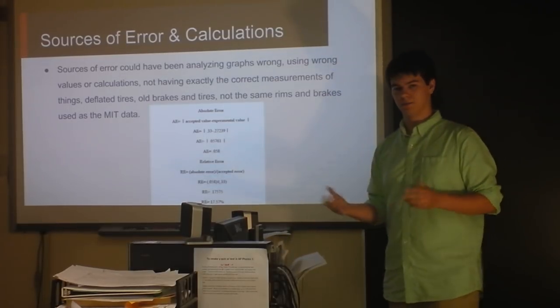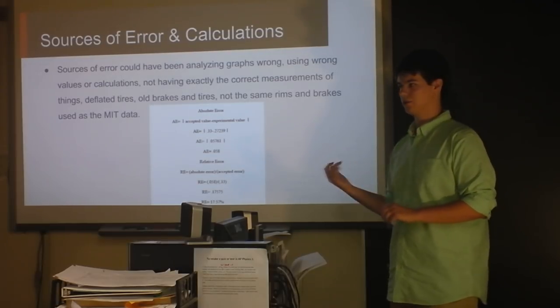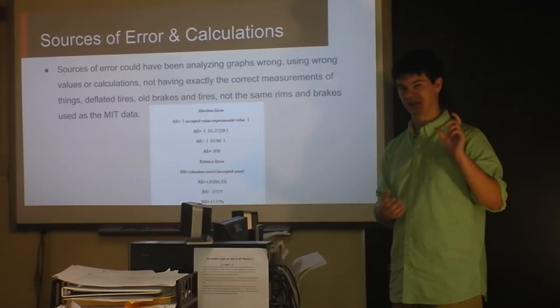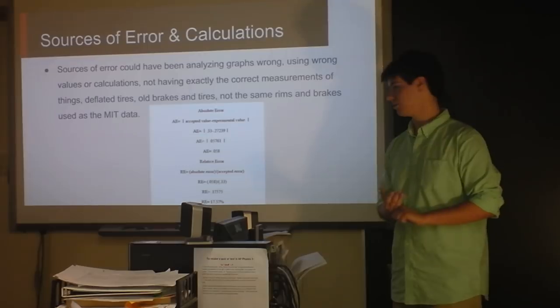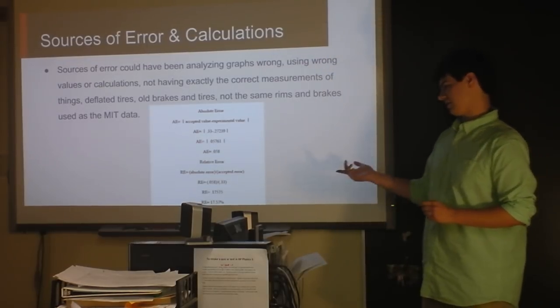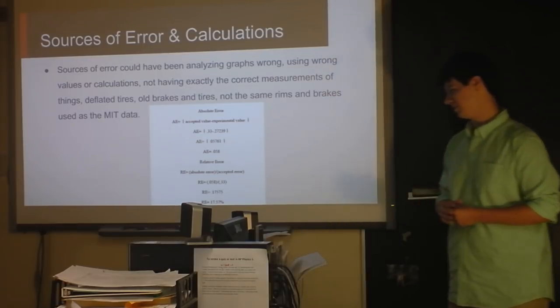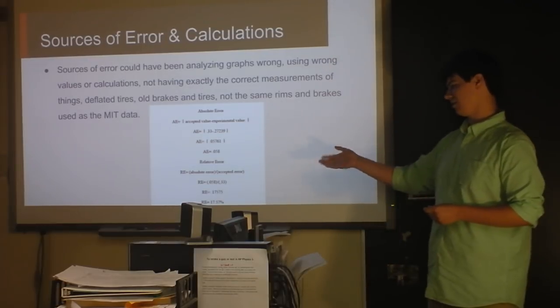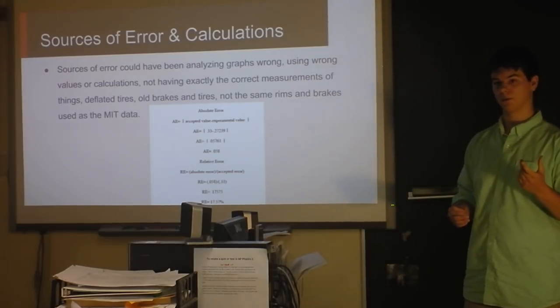And they used possibly different brakes, different rims, because most rims are made out of aluminum, because the brake rests on the rim instead of the actual tire. So, but they can also be made out of both materials, which could affect it. And my error ended up being about 17.57 percent, which isn't that far off, considering theirs was 0.33 and the closest one I had was about 0.327.